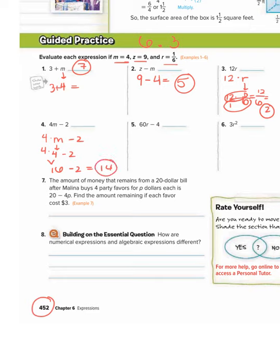Number 5, 60r minus 4. So that means 60 times r minus 4. r is 1/6. So we have 60 times 1/6, minus 4. So remember, we could put a 1 down there.